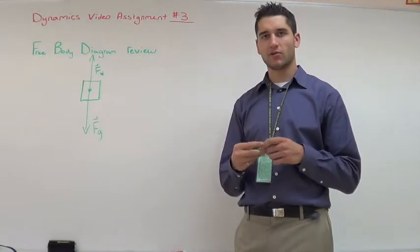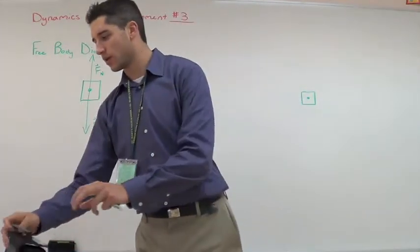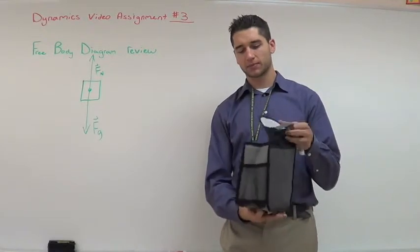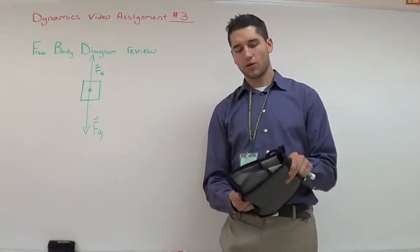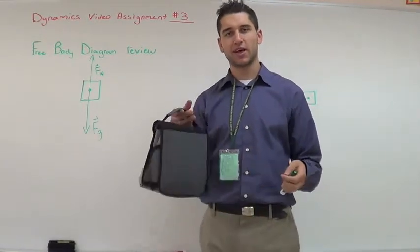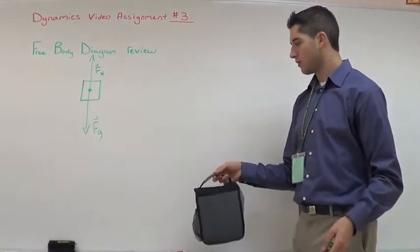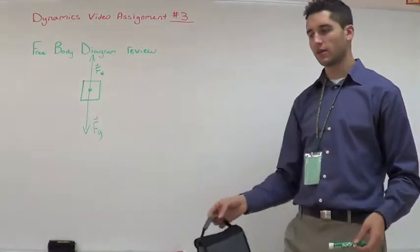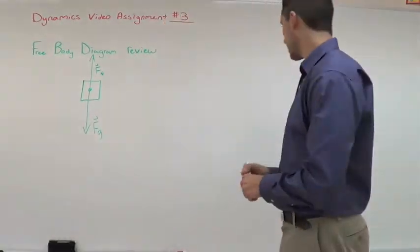Now, if we look at a little more complicated example, we can take a bag and I can take a sandwich and put it in the bag. Now if I wanted to draw a free body diagram for my sandwich bag, moving up at a constant velocity, it's going to look something like this.